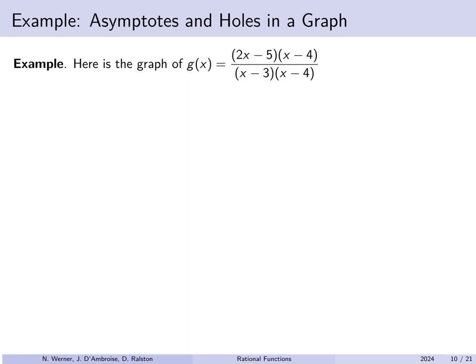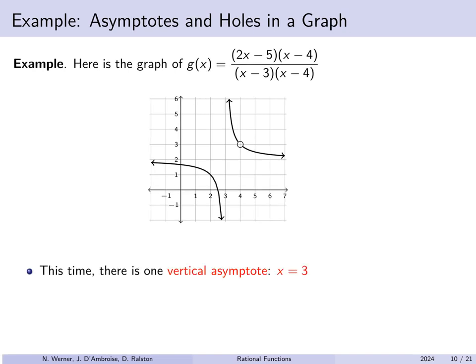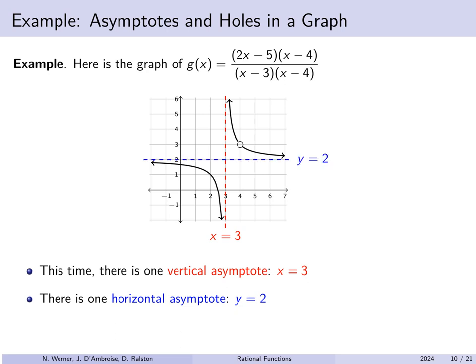Here's the rational function 2x minus 5 times x minus 4 divided by x minus 3 times x minus 4 — both numerator and denominator are polynomials of degree 2. There is one vertical asymptote, the line x equals 3. As x gets close to 3, the curve shoots off in opposite directions but never touches that line. There is also one horizontal asymptote of y equals 2, which the curve approaches as x moves left and right. There is a hole in this graph at the specific point 4 comma 3 — this point has simply been removed from the graph.